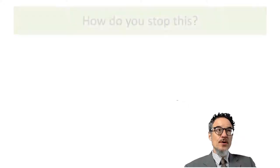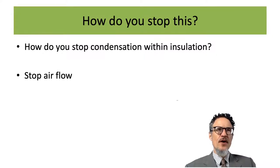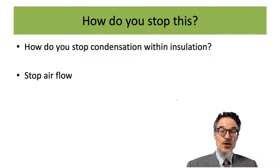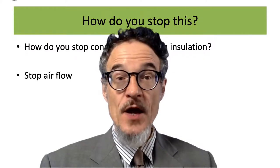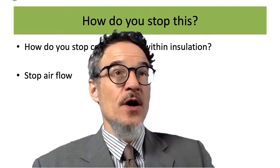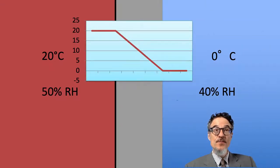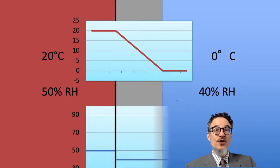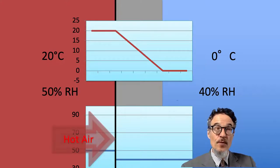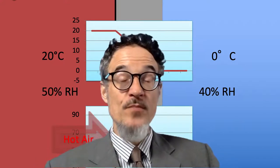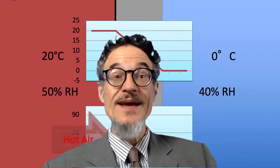How do we stop condensation within insulation? We need to stop the airflow. The reason we get condensation is because hot air is moving through the insulation out of the building. So we need to add a vapour barrier. With a barrier in place, we still get the nice temperature gradient, but we stop the hot air from passing through the wall, so we don't get high humidity inside the wall. Airtightness is very important — if we're going to have insulation we need to stop the air, otherwise we'll get condensation and water building up inside the wall.